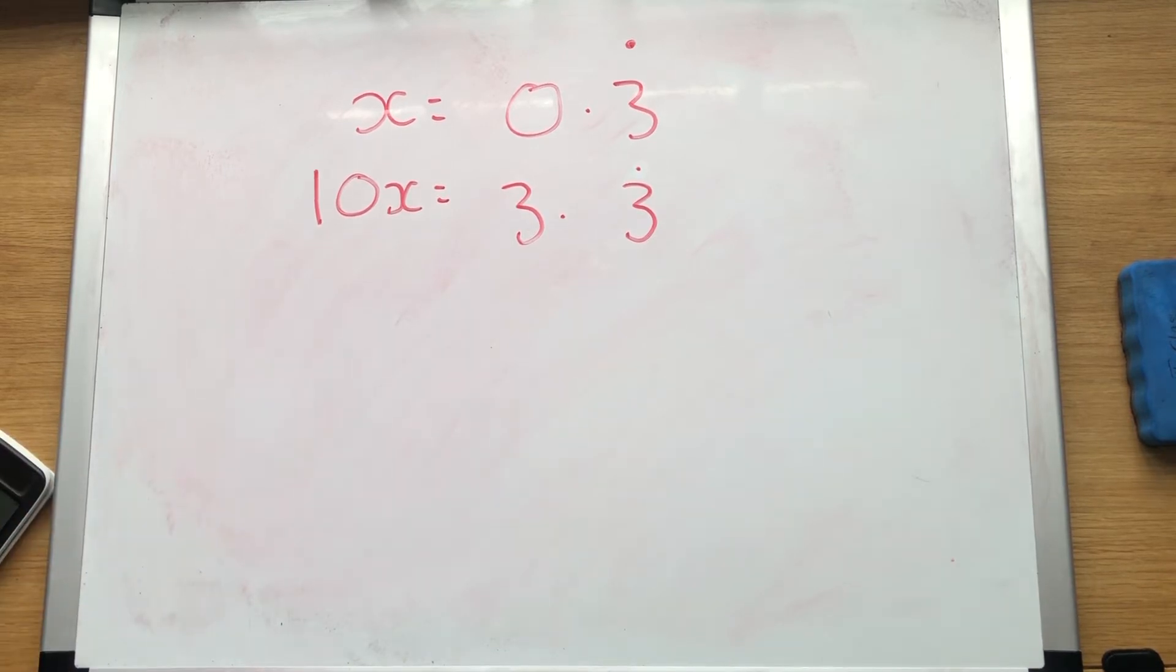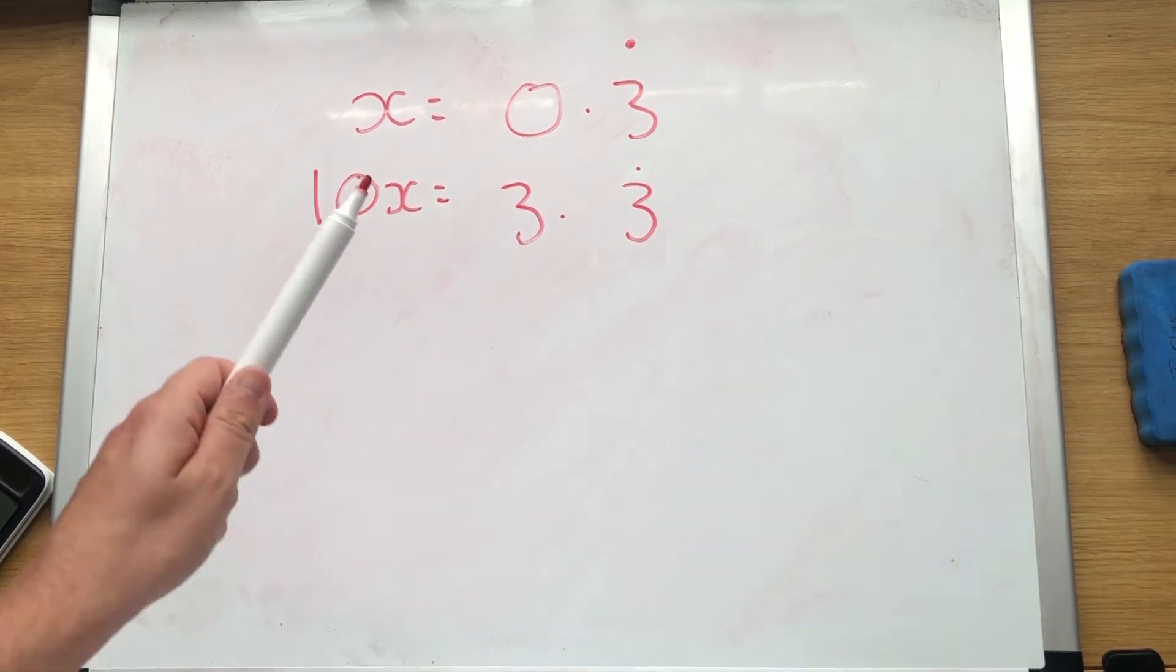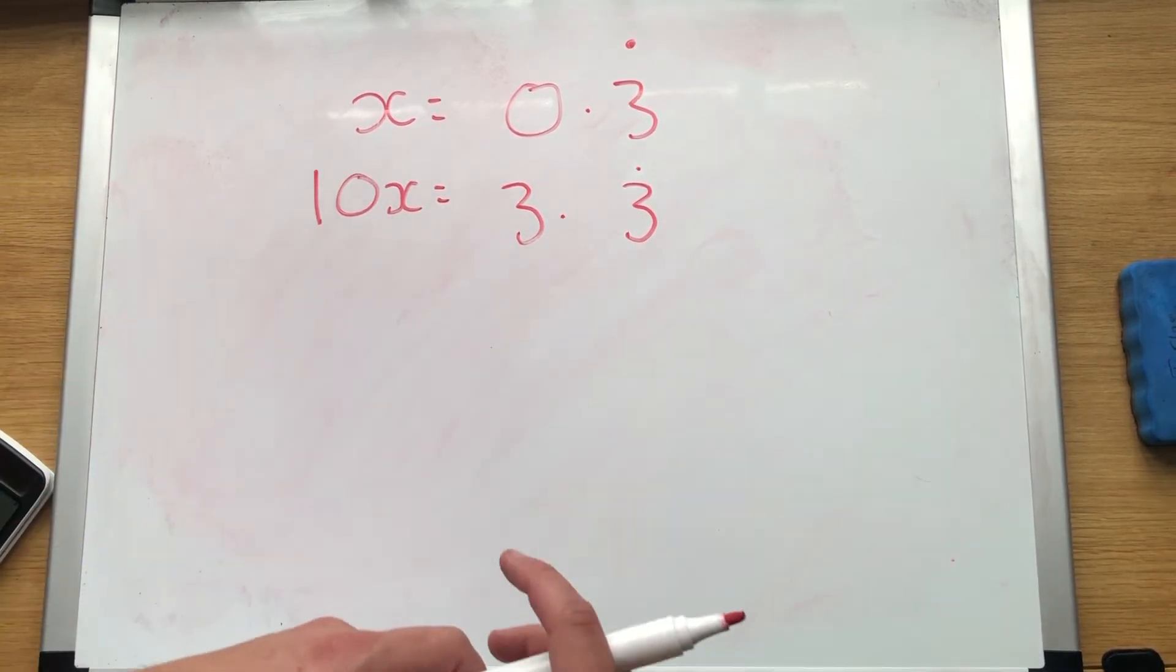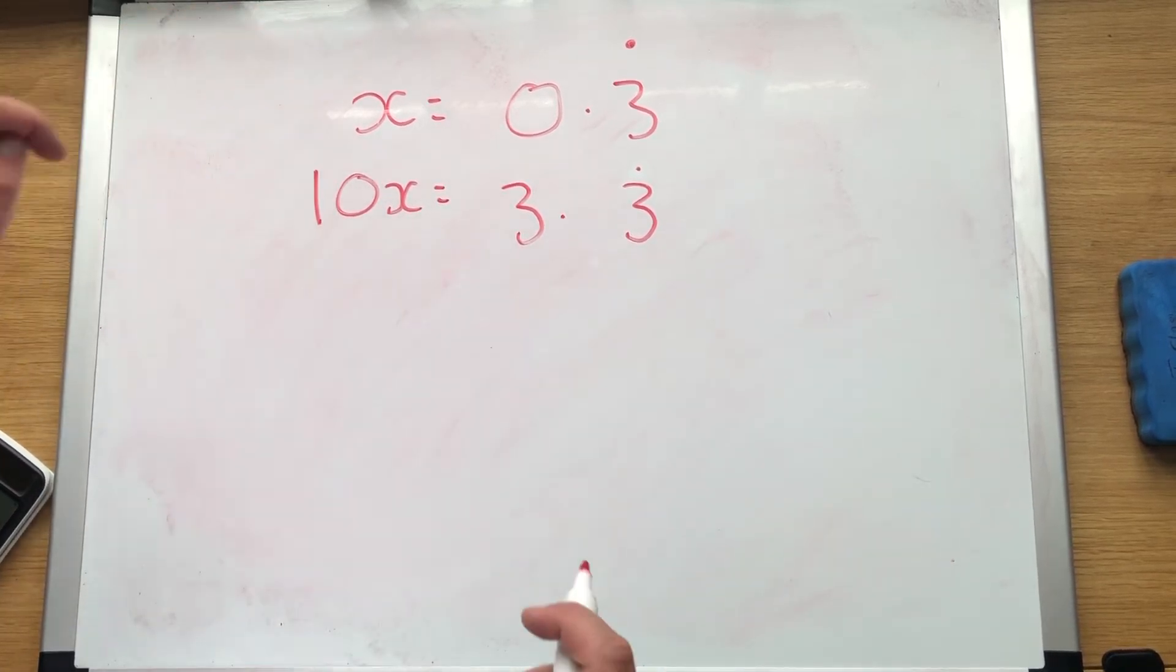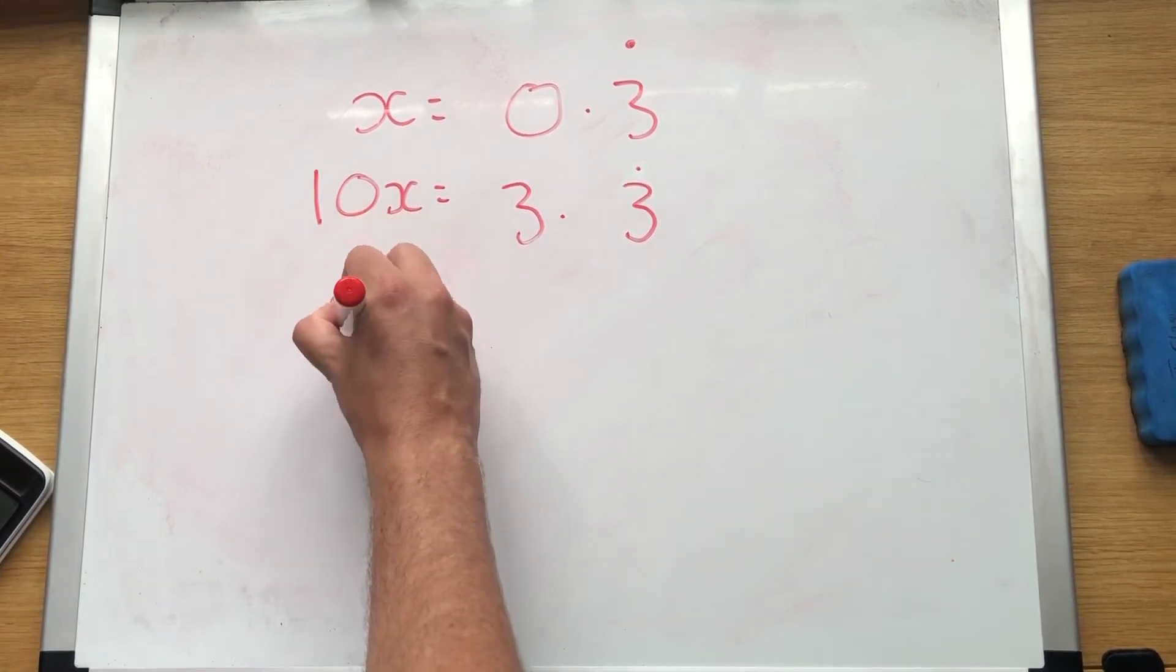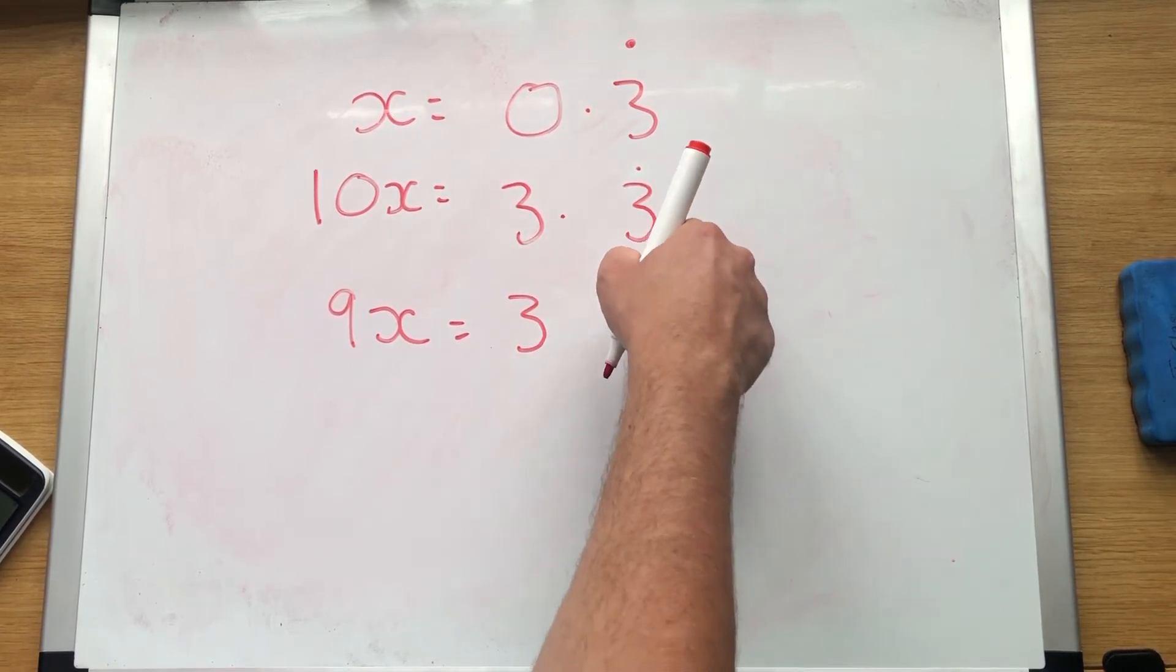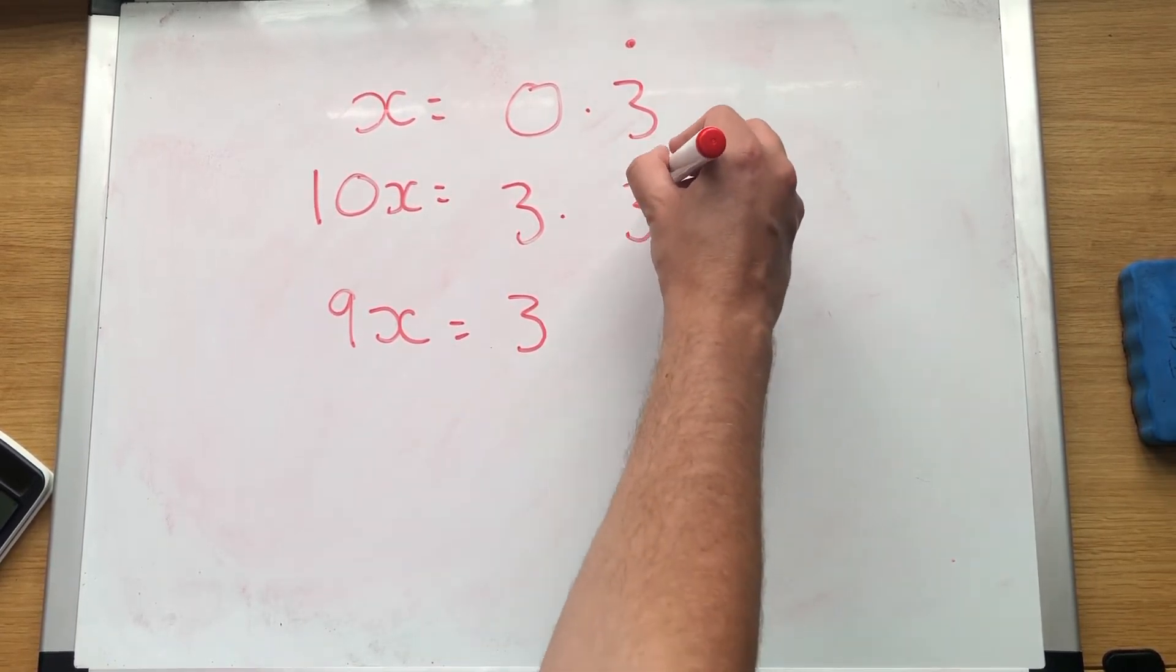Now we get to what I think is probably my favourite step in the whole of maths. I just think it's so clever. Whoever came up with it is an absolute genius. Because what we do is we subtract this from this. 10x take away x, 9x. 3 take away 0, 3.